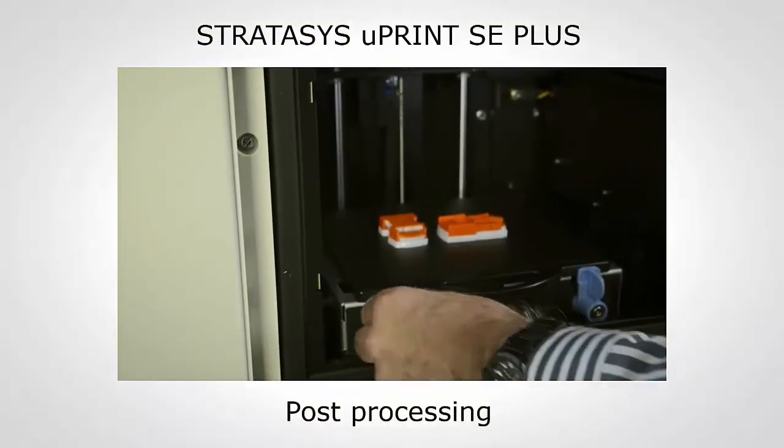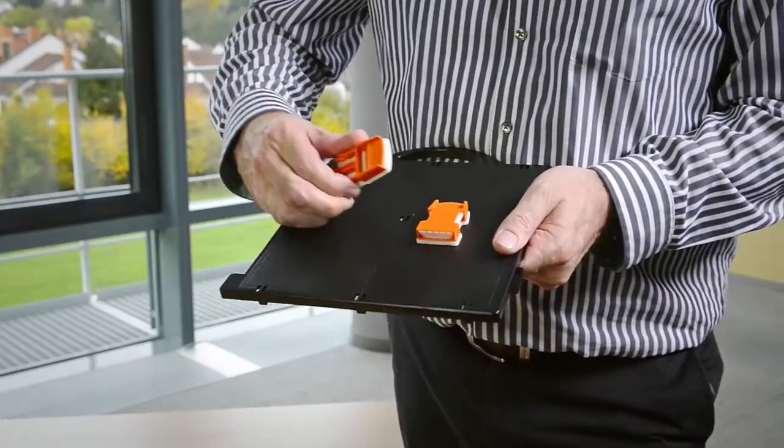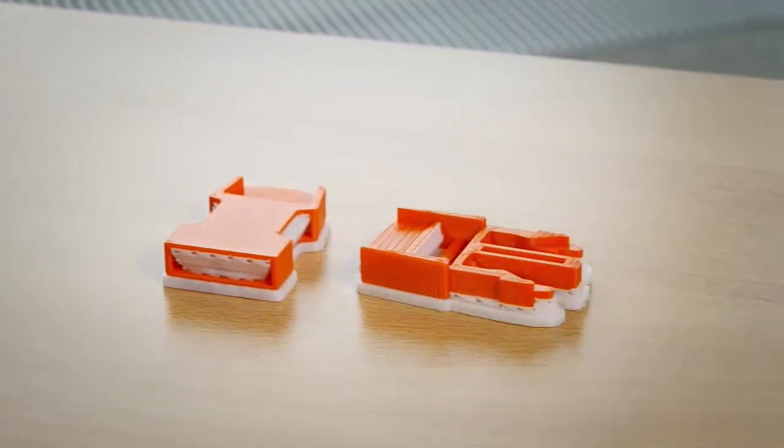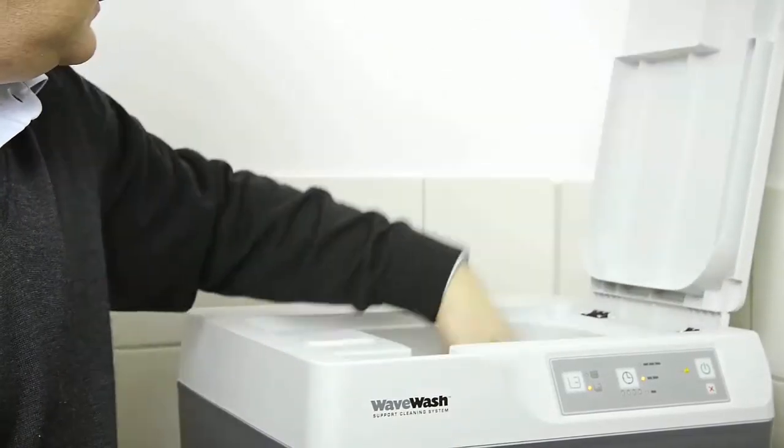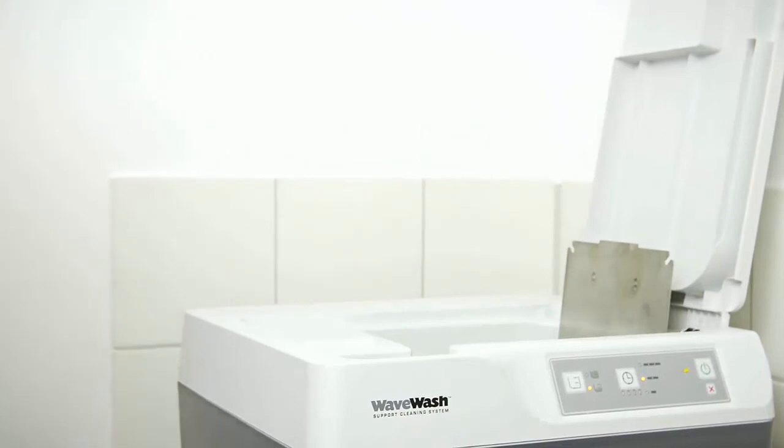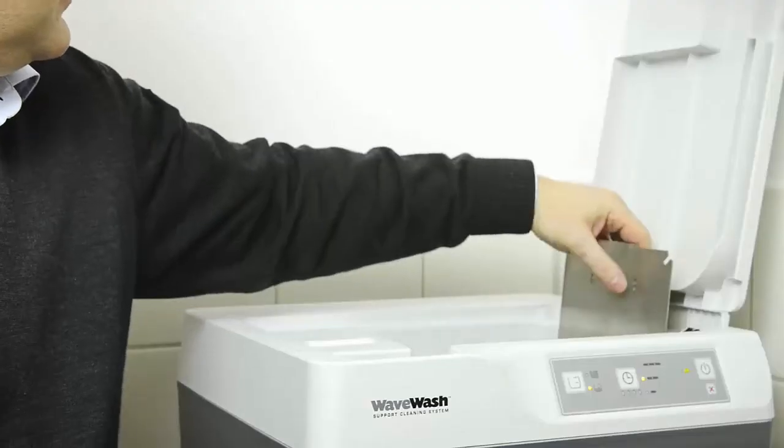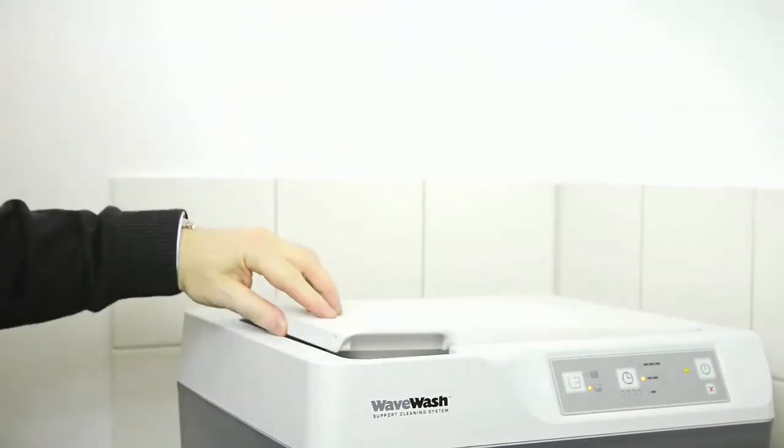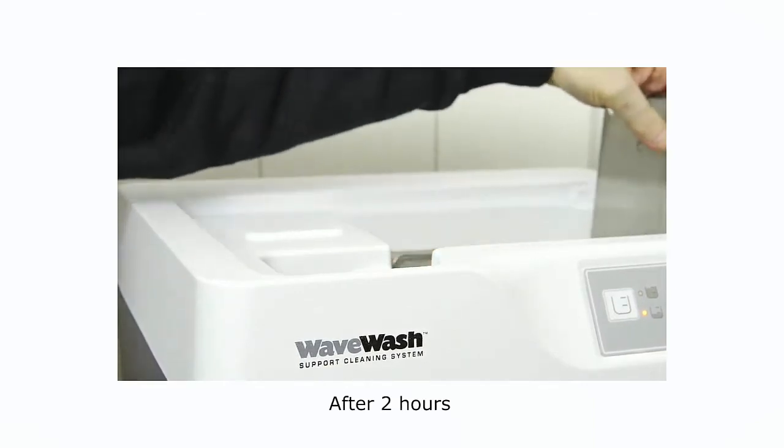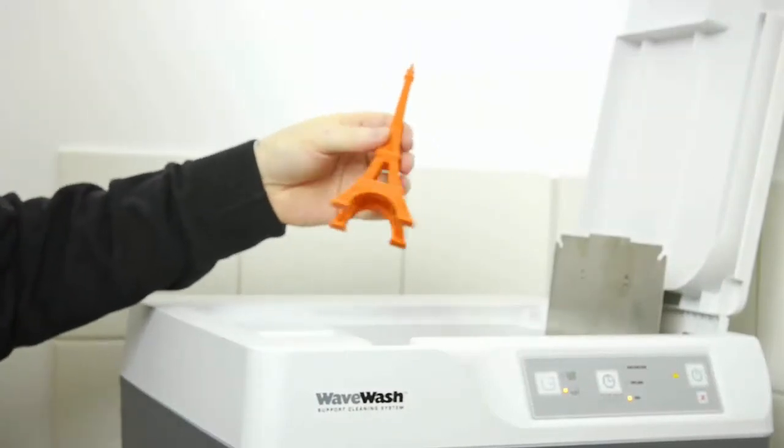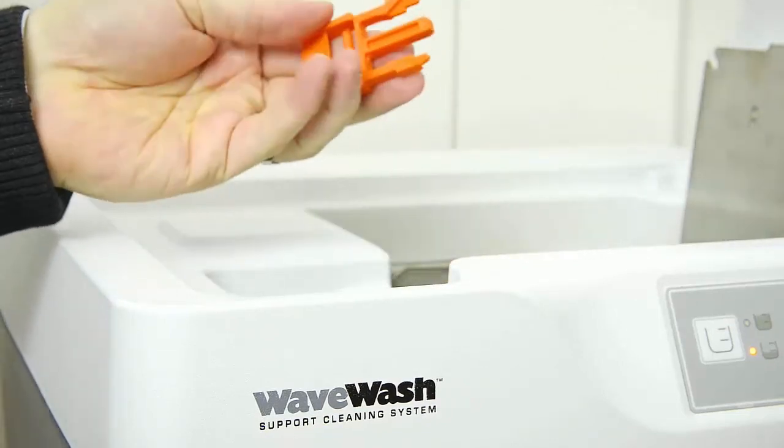So let's look at the post-processing with the U-Print SE Plus. The U-Print SE Plus has a wave wash system fully automated to dissolve the soluble support material. It then will go into a rinse cycle and drain the fluid down into a standard drainage system. This allows you then to take your part out, which is then completely ready for use, with no other post-processing requirements needed.